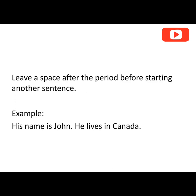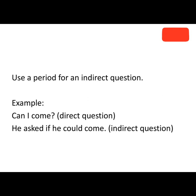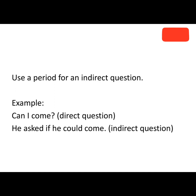Also, use a period for an indirect question. For instance, 'He asked if he could come.' That's an indirect question. But for a direct question like 'Can I come?' you will use a question mark. If it's an indirect question, you use a period to complete the sentence.